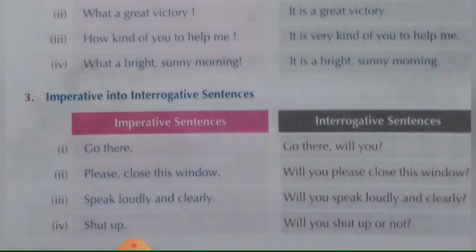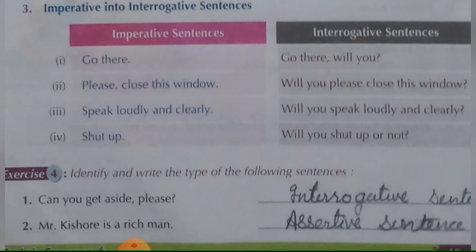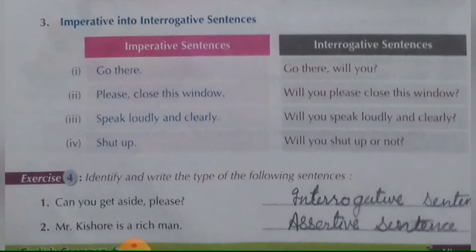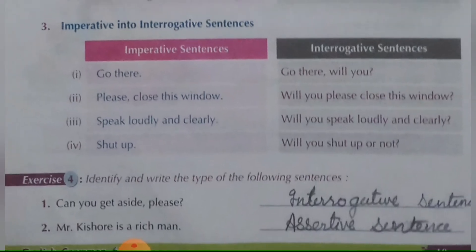Now we will do some exercises to identify the type of sentences. First: 'Can you get aside, please?' — this is an interrogative sentence. Second: 'Mr. Kishore is a rich man' — this sentence ends in a full stop, so it is an assertive sentence.